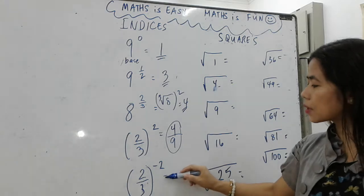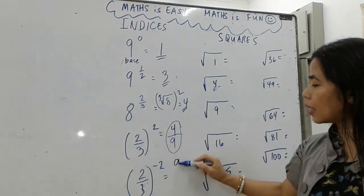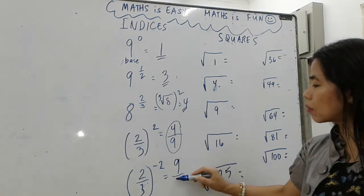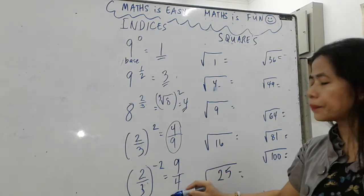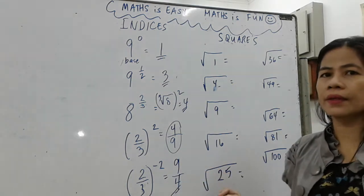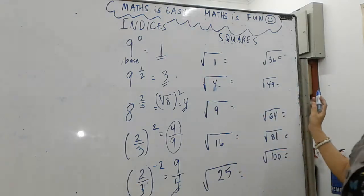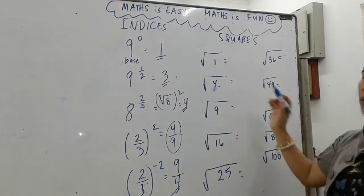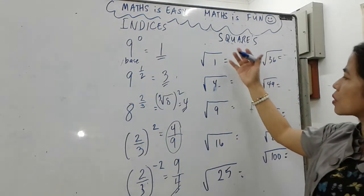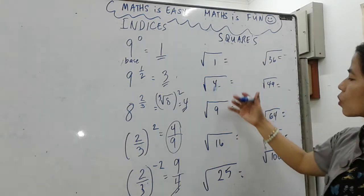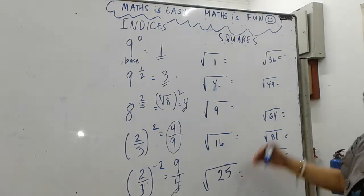it becomes nine over four. Now let's go to squares. These numbers — one, four, nine, sixteen, twenty-five, thirty-six, forty-nine, sixty-four, eighty-one, and one hundred — are called perfect squares from one to one hundred.